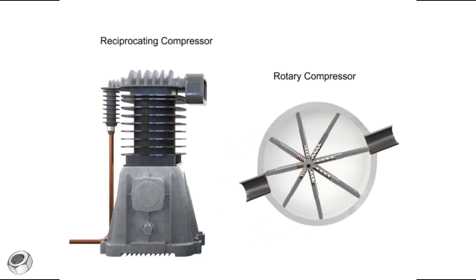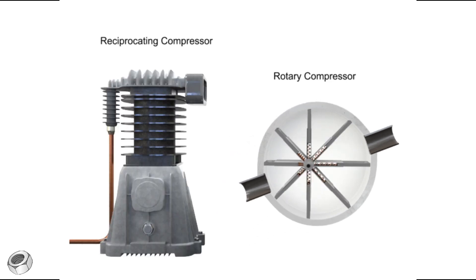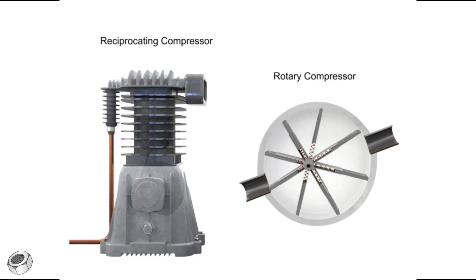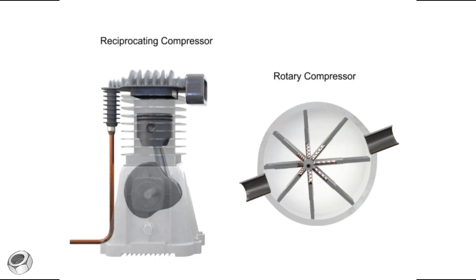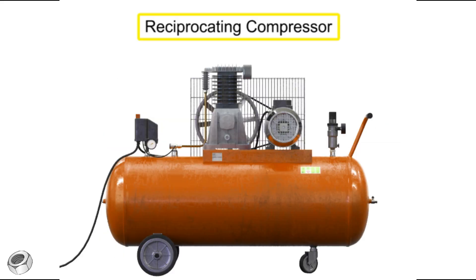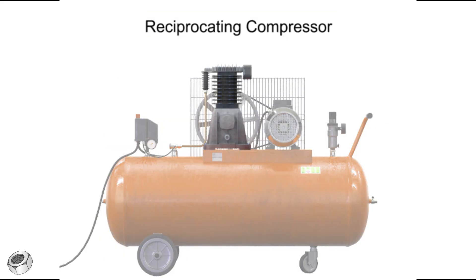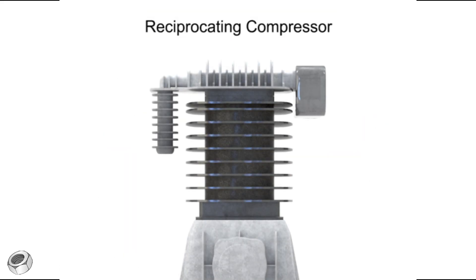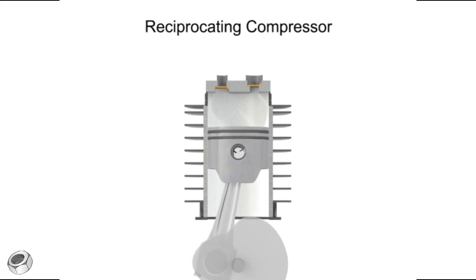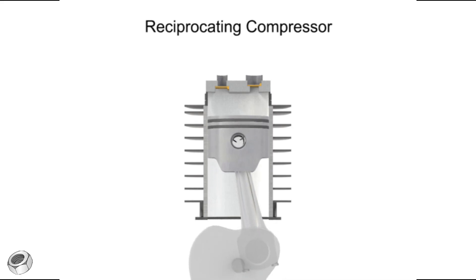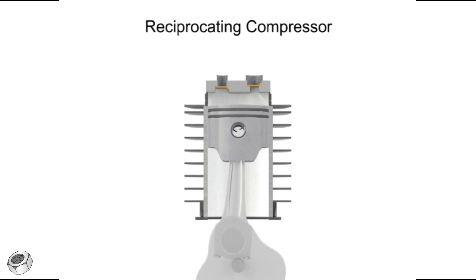Rotary compressors are typically free of the vibration and pulsation that occurs with reciprocating compressors. A typical reciprocating compressor consists of a housing with an internal piston connected to a crankshaft. As the crankshaft turns, a piston reciprocates within the cylindrical housing. There are two valves at the head of the cylinder: an inlet and an outlet.